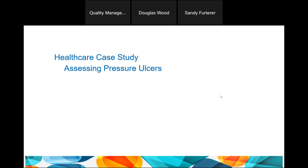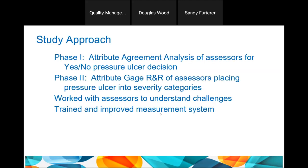This example is assessing pressure ulcers. A pressure ulcer is a localized injury to the skin and underlying tissue — before getting into healthcare, I did not know what they were. They can go from looking like bruises to some pretty serious and dangerous sores on the skin. I did not put pictures in here because it is close to dinner time. This was a really important study from the perspective of getting the measurement right.